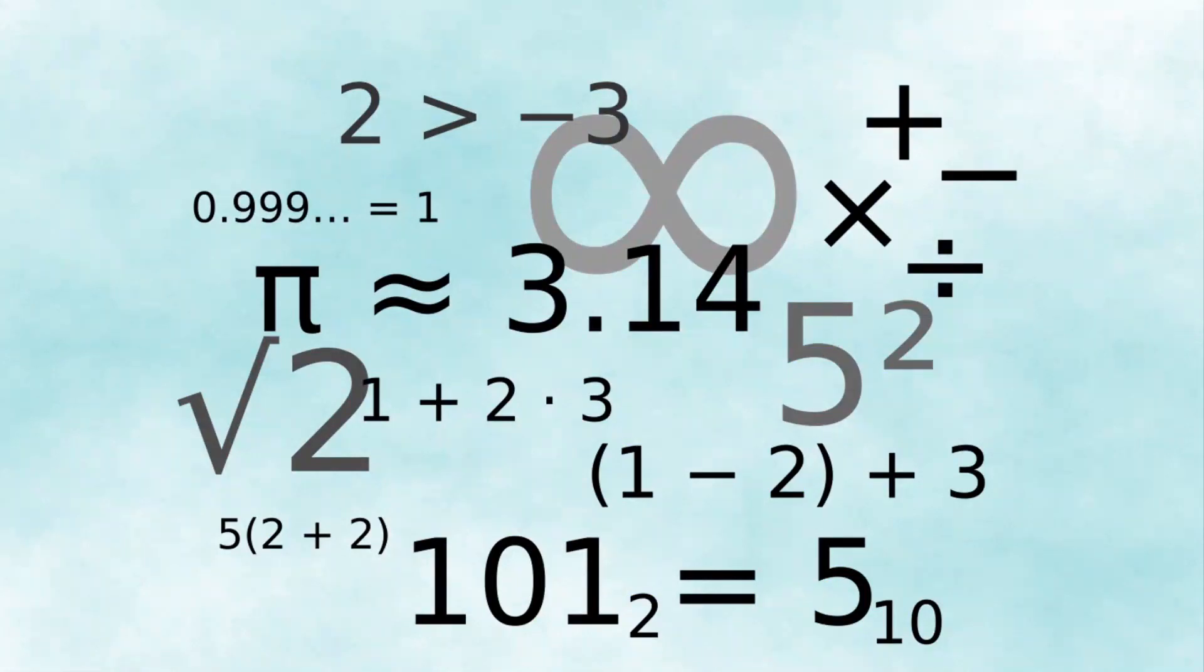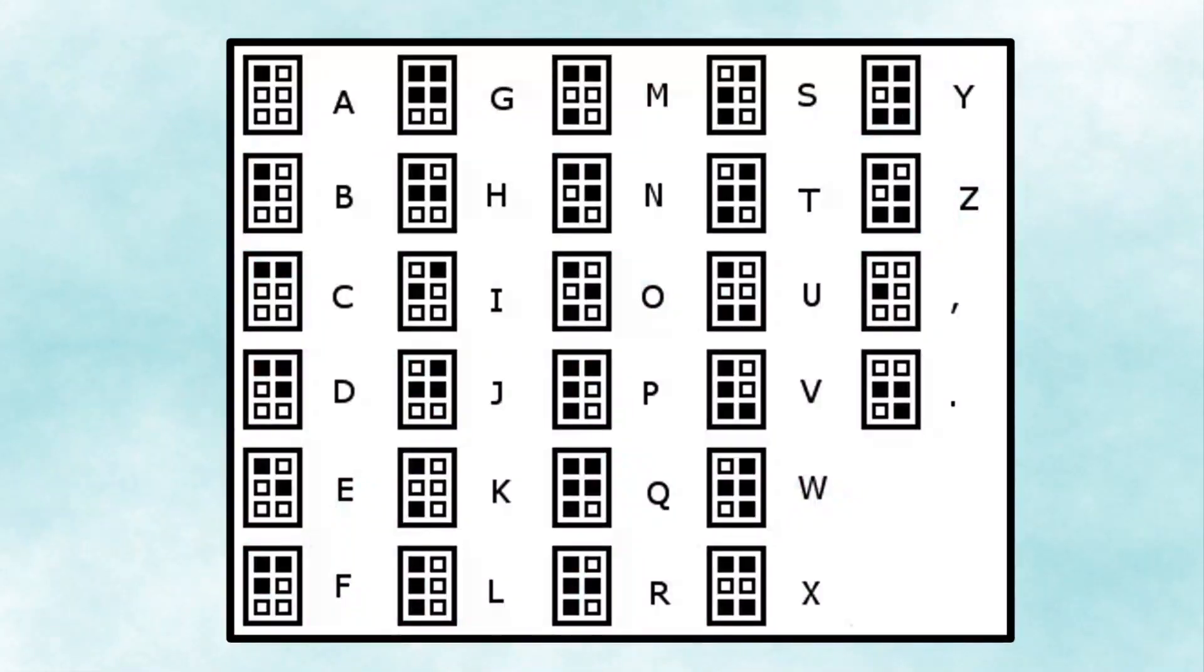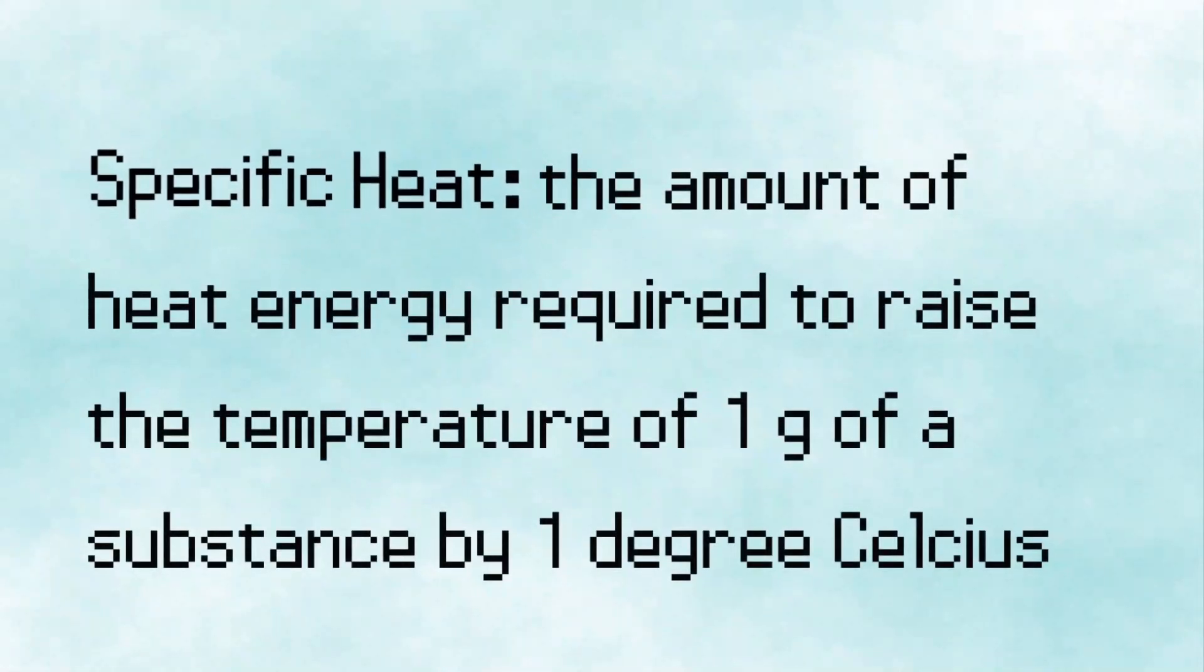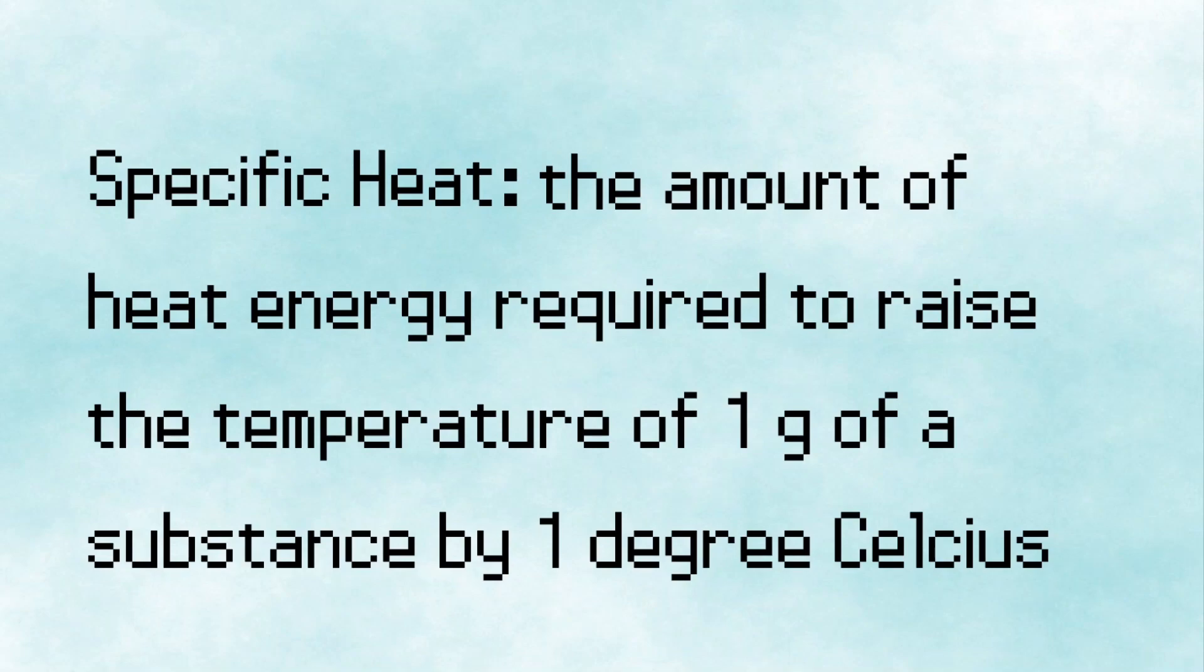Now, the math involved might get a bit complicated, kind of like the method for catching the Regice, so stick with me here. First, we'll have to look at the specific heat of ice. For our purposes, we can define specific heat as the amount of heat energy required to raise the temperature of 1 gram of a substance by 1 degree Celsius.